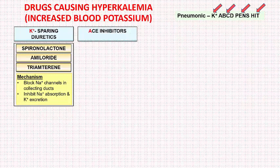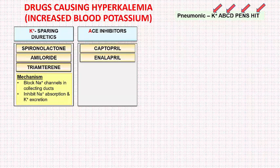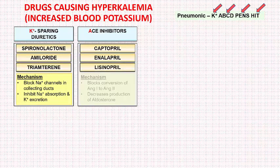The next class is ACE inhibitors. The names of all drugs in this class end with the letters PRIL — examples include captopril, enalapril, lisinopril, ramipril, perindopril, etc. These drugs inhibit the angiotensin-converting enzyme and block the conversion of angiotensin 1 to angiotensin 2. Decreased angiotensin 2 results in decreased aldosterone production, which leads to sodium excretion and potassium retention.